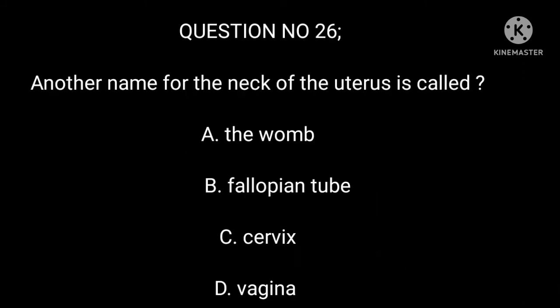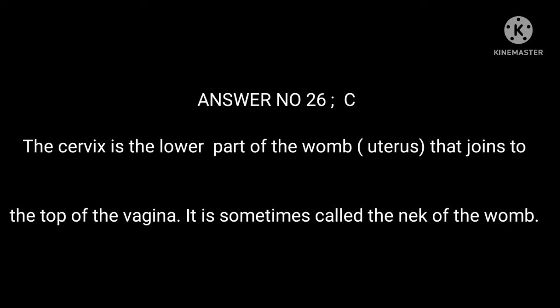Question number 26. Another name for the neck of the uterus is called: A. The womb. B. Fallopian tube. C. Cervix. D. Vagina. Answer number 26: C. The cervix is the lower part of the uterus that joins to the top of the vagina. It is sometimes called the neck of the womb.